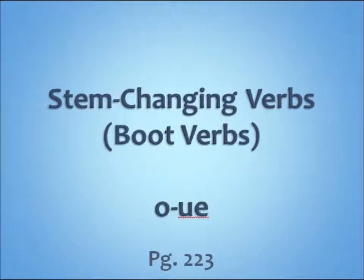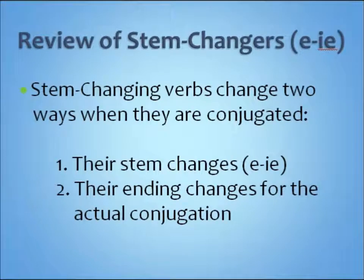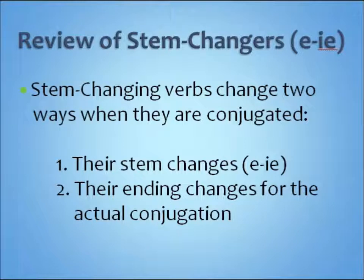So far we have learned how to conjugate e to ie stem changers, but today we're going to cover o to ue and e to i stem changers. Just for a review, remember there are two ways to conjugate these verbs. Number one, you change their stem — the stem is what's left over after you take off their ending, either ar, er, or ir. Next, their ending changes for their actual conjugation.